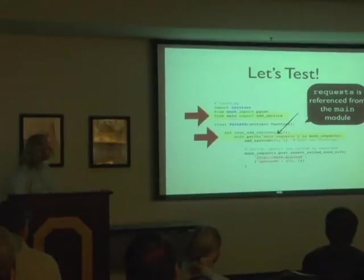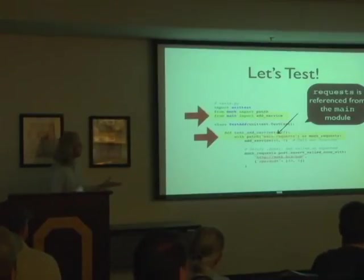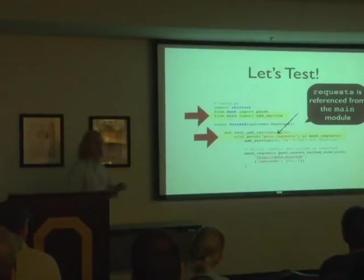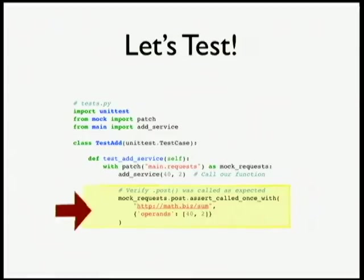The rest of this test is pretty straightforward. Patch is interesting and flexible. I'm using it as a context manager here. As a context manager, I can get a reference to the mock object that it replaces — with patch main.requests as mock_requests. So mock_requests is itself a mock instance. I'll call my add service, pass in some parameters, and then here's the point at which I verify that requests was called the way I expected it to be called.